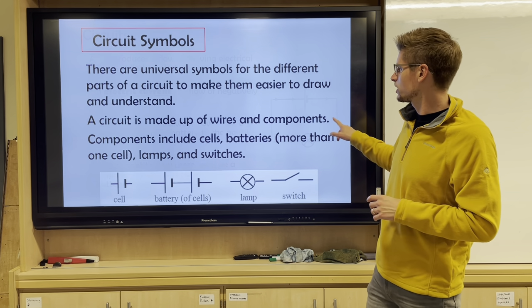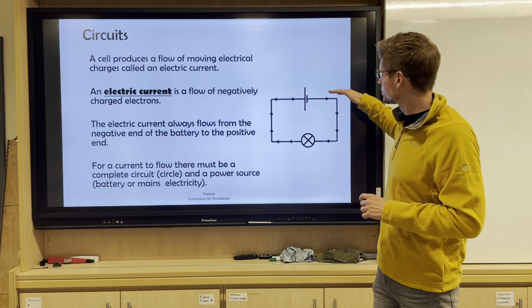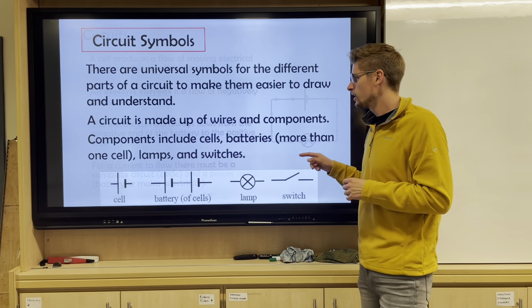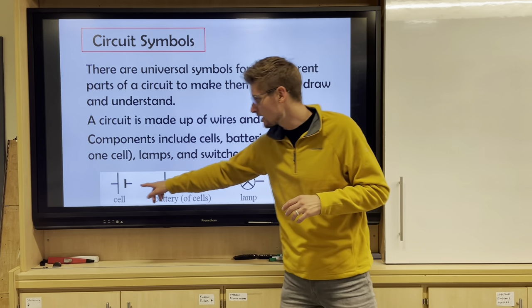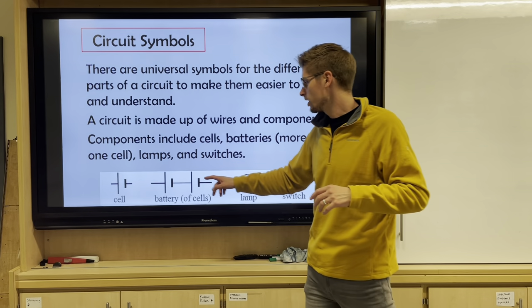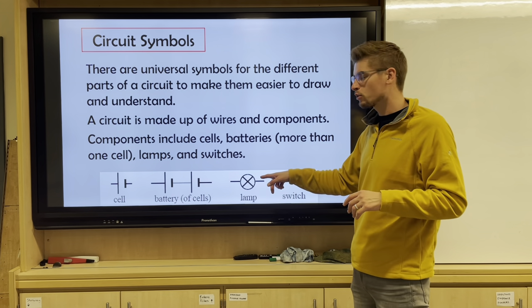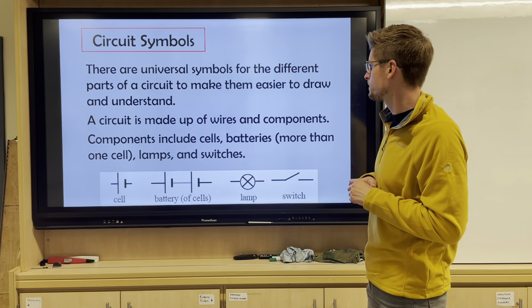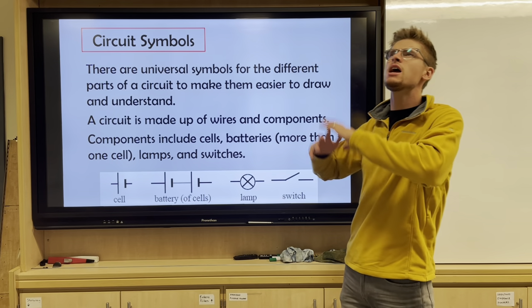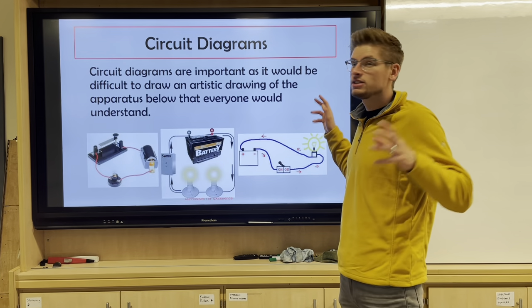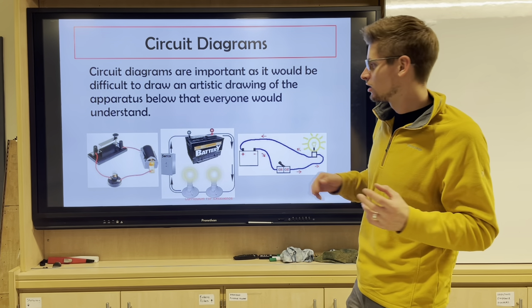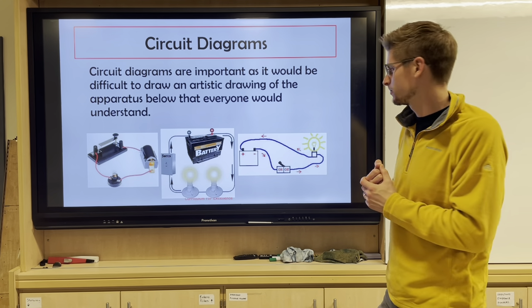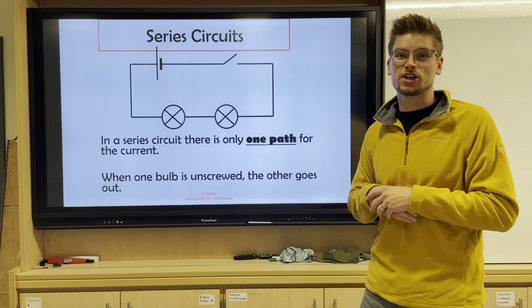We use circuit symbols to make our lives as physicists easy. We drew a cell, wires going into a bulb, and back again - a nice 2D diagram. The symbols to know are: a cell, a battery which has lots of cells, a lamp or bulb shown as a cross in a circle, and a switch shown as a small lever. Circuits are made up of wires and components. Without circuit diagrams we'd have to draw detailed realistic pictures, which nobody wants, so a simple 2D drawing makes it much easier.